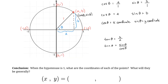So the conclusion is: on the unit circle, any point (x, y) will have coordinates where x = cos(θ) and y = sin(θ). Our x-coordinate is always going to be cos(θ), and our y-coordinate is always equal to sin(θ).